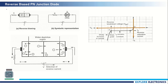In reverse bias, the anode is connected to the negative terminal and the cathode to the positive terminal of the source. The electrons in the N-region are attracted towards the positive battery terminal, and holes in the P-region are attracted towards the negative terminal. As a result, the barrier increases — the depletion region widens — and there is no significant current flowing through the diode. The reverse current is very, very small, essentially negligible.